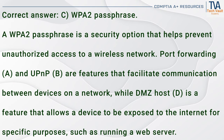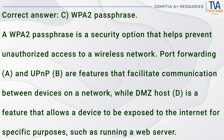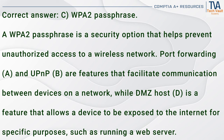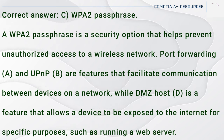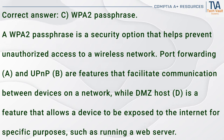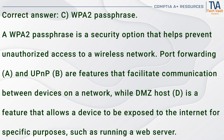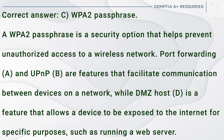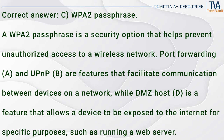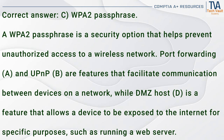Correct answer: C. WPA2 passphrase. A WPA2 passphrase is a security option that helps prevent unauthorized access to a wireless network. Port forwarding (A) and UPnP (B) are features that facilitate communication between devices on a network. DMZ host (D) is a feature that allows a device to be exposed to the internet for specific purposes, such as running a web server.